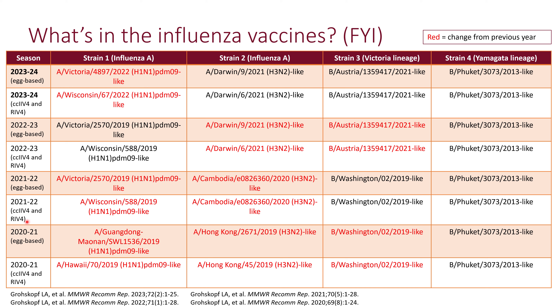Since 2021, every influenza vaccine on the market is quadrivalent, so we no longer have trivalent on the market. All of them have all four strains.